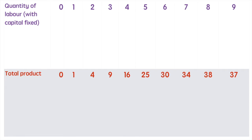For the first worker they bring total output to 1 unit. The second increases the total to 4. The third brings us to 9, and this continues all the way to the 9th worker who, along with the others, produces a total of 37 units.